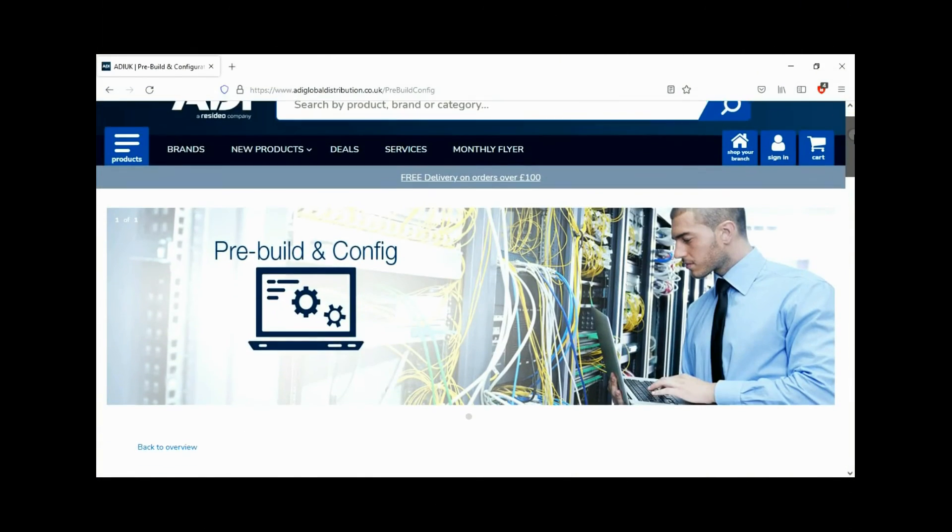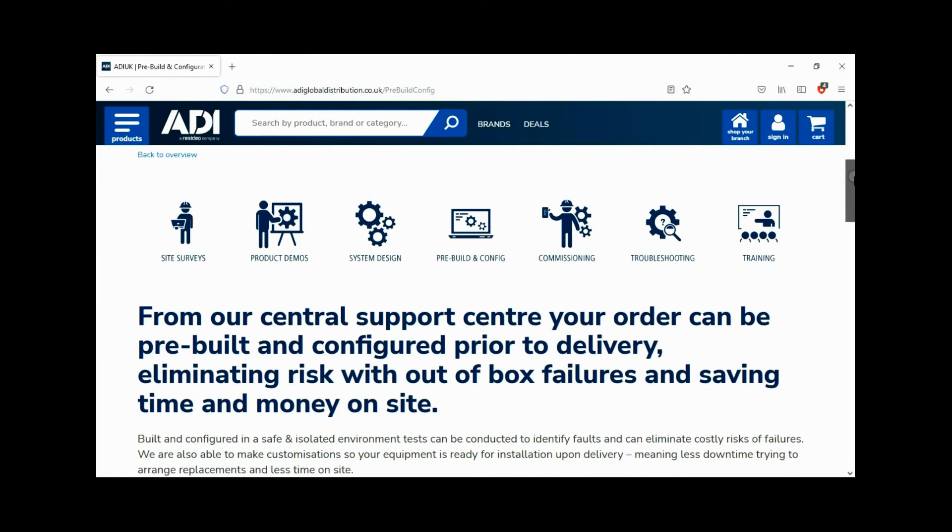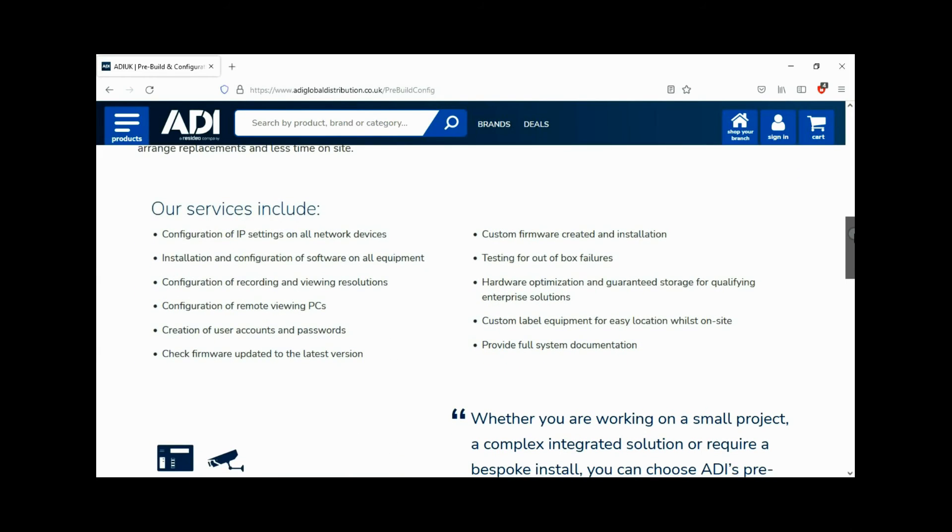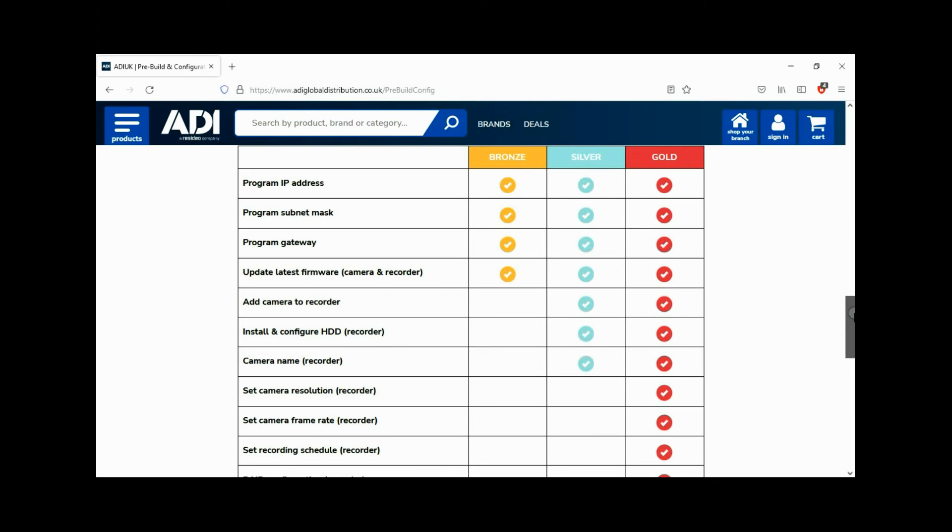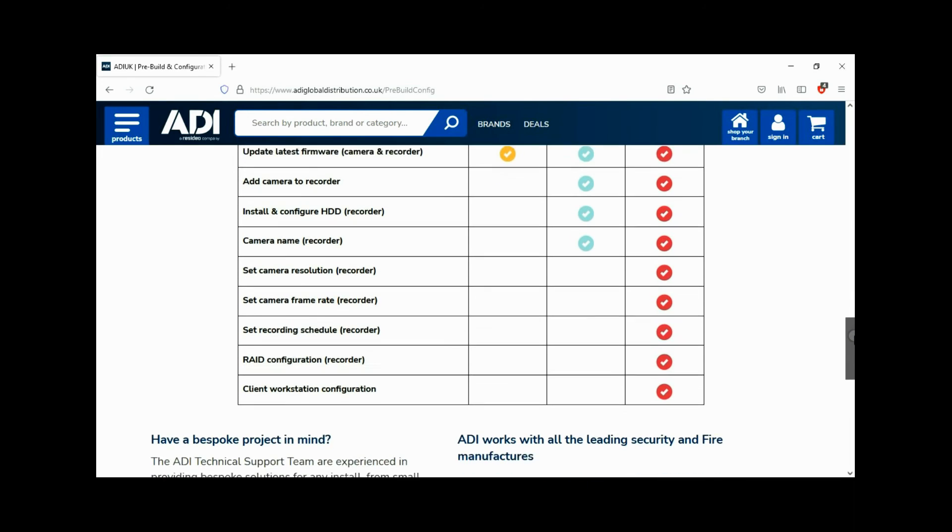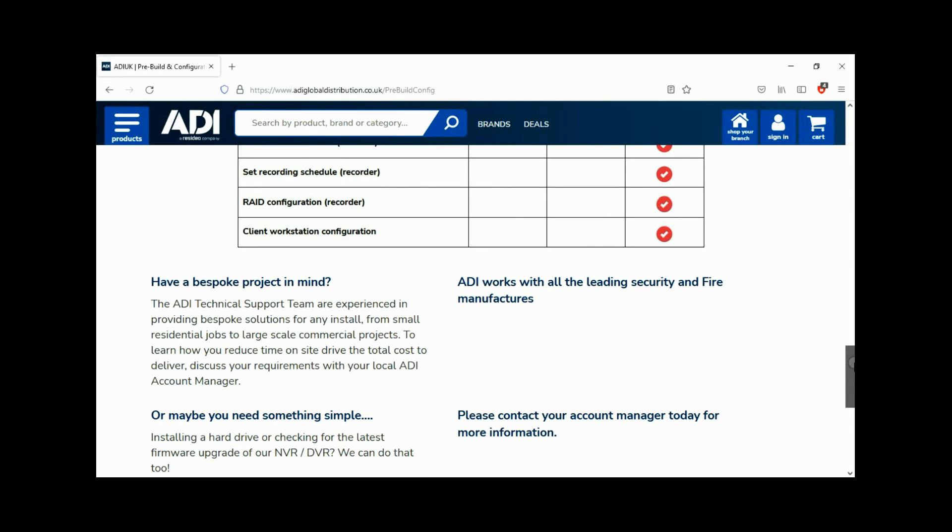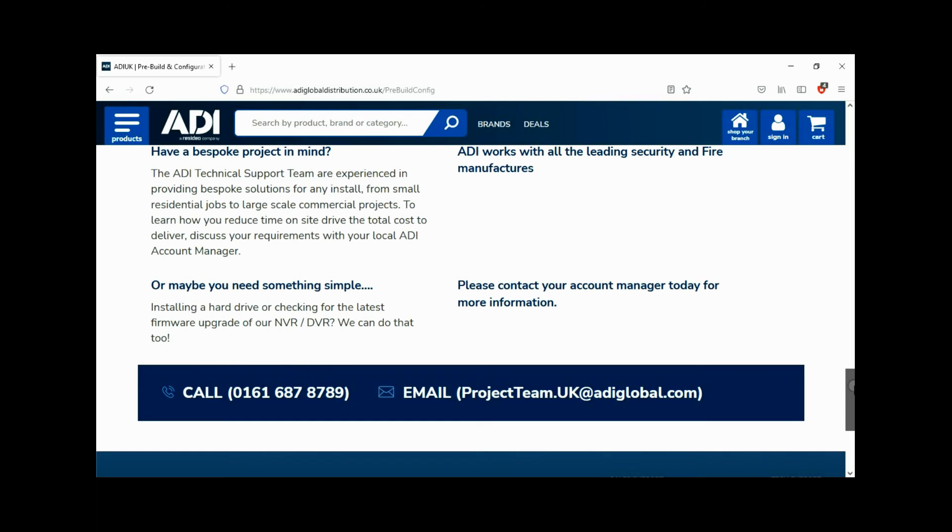Installers rely on ADI. The ADI projects and technical teams offer a pre-configuration service. Any project size from a single device to a complex system. Any IP device can be configured from our central hub using our technical and project teams. Having your device pre-configured will save engineers time on site. We can set your IP address, the gateways, and in addition, we'll make sure your device has the latest firmware on board. Simply get in touch with your ADI sales contact or email the project team.